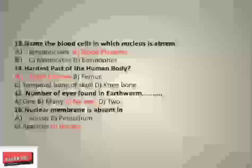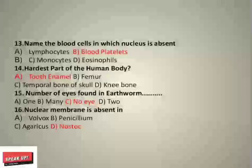The hardest part of the human body is the tooth enamel — it is the hardest and most highly mineralized substance in the human body; it is a tissue, not a bone. The number of eyes found in earthworm is zero — no eyes. The nuclear membrane is absent in prokaryotic cells. A prokaryotic cell has no membrane-bound organelles and no well-organized nucleus; the nuclear envelope is absent in these cells.